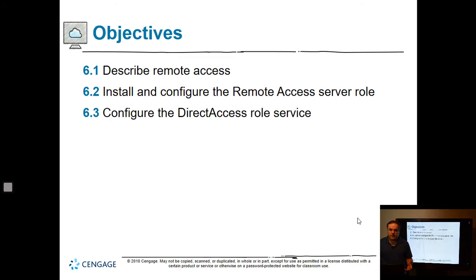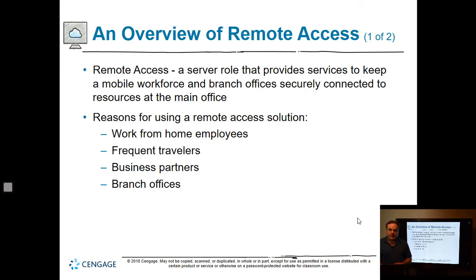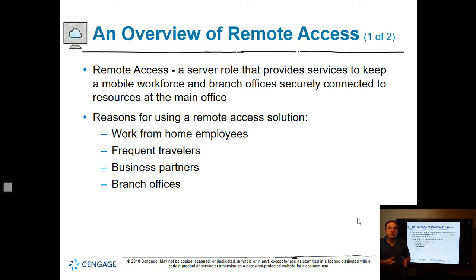We're going to describe what remote access is and install and configure the remote access server. Remote access is a server role that provides services to keep a mobile workforce and branch offices securely connected. Routing and remote access can be used as a router, as a VPN server, or as a site-to-site VPN server where one Windows server connects to another Windows server across a site.